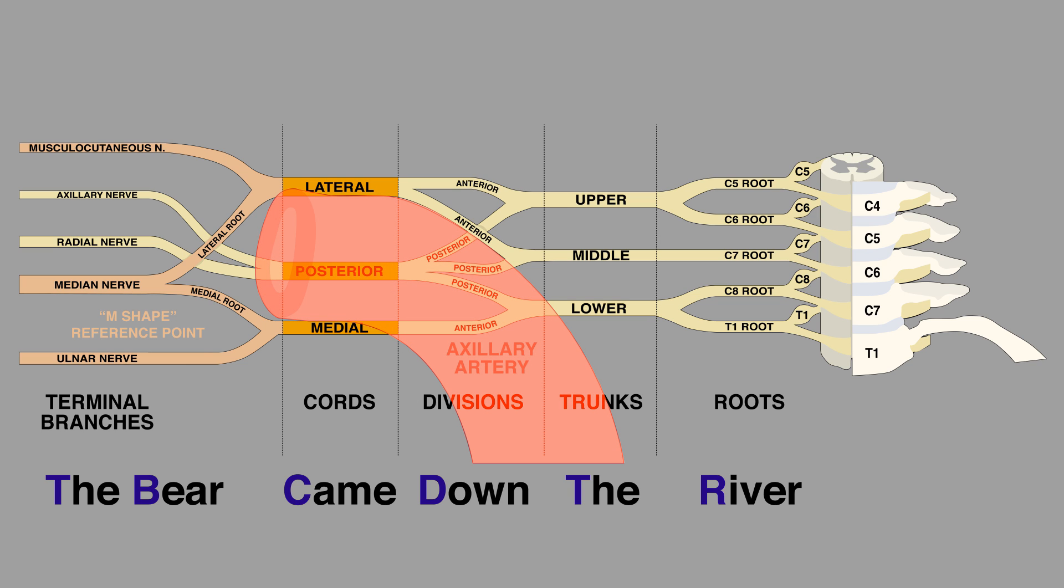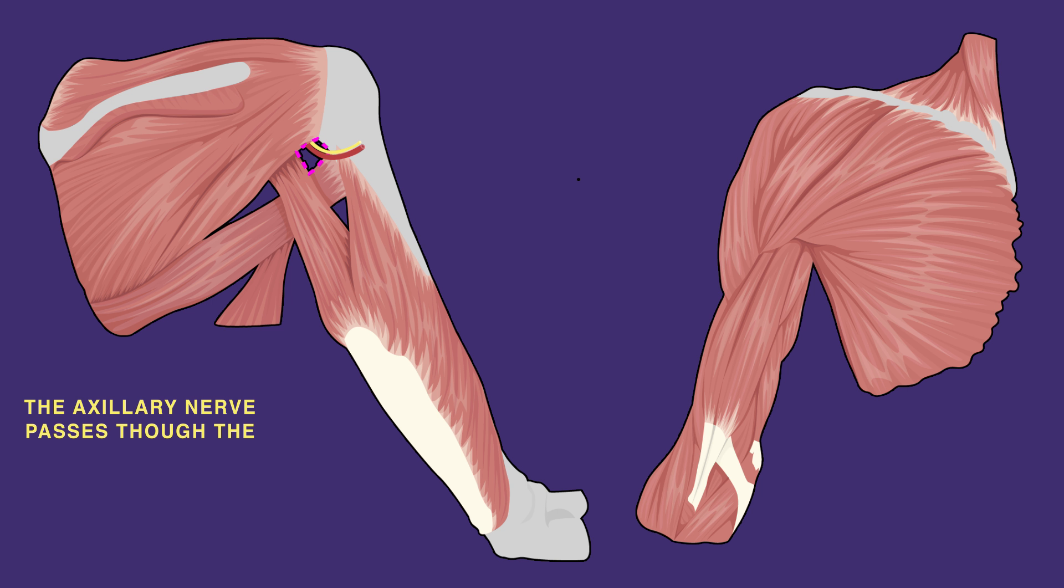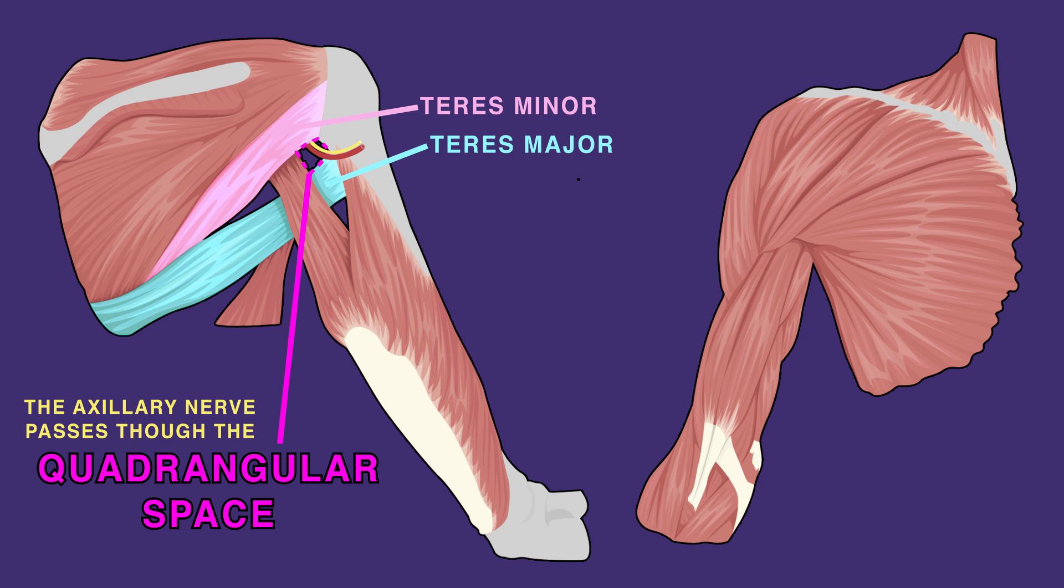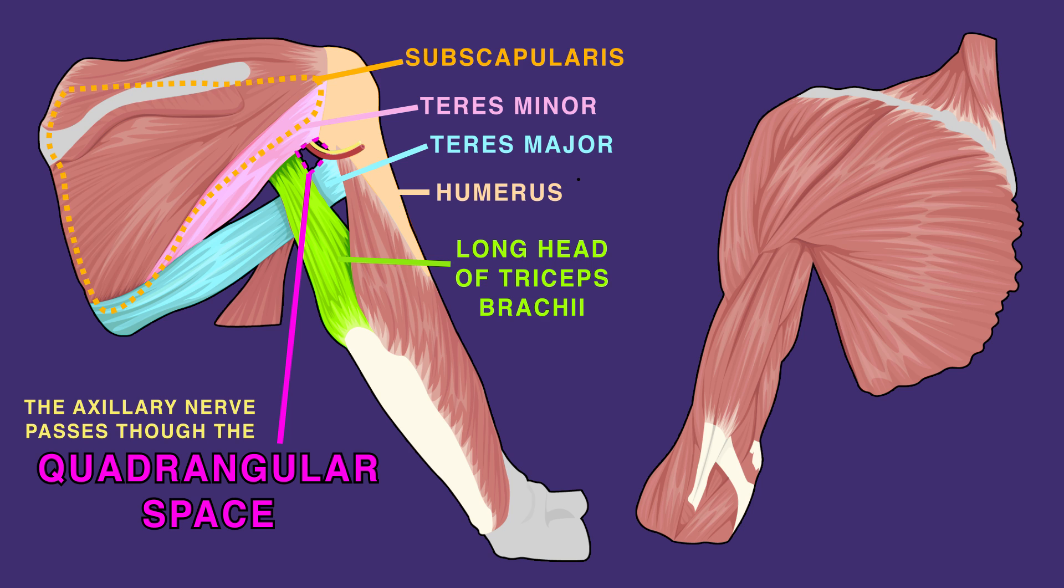The cords surround the axillary artery and are named based on their position relative to it. The posterior cord is posterior to the axillary artery. The lateral and medial ones are on either side. The posterior cord splits into the axillary and radial nerve. The axillary nerve passes through the quadrangular space, between teres minor and major, the long head of triceps brachii, the humerus, and the subscapularis, to innervate the deltoid and the teres minor.